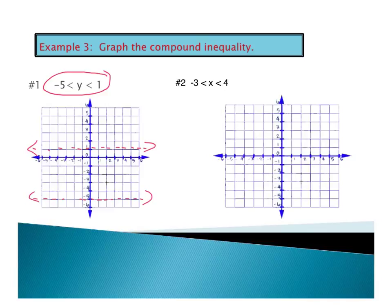It says y is greater than negative 5 and less than 1. Greater than negative 5 is on this side, less than positive 1 is on this side. So I'm basically just shading right between the lines. That's all there is to that one.